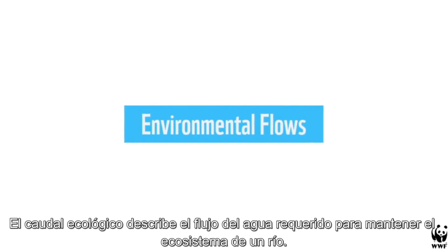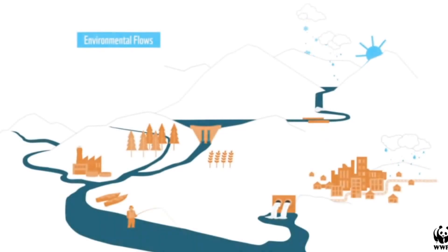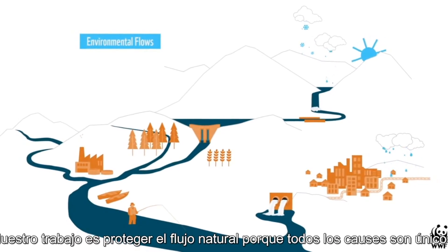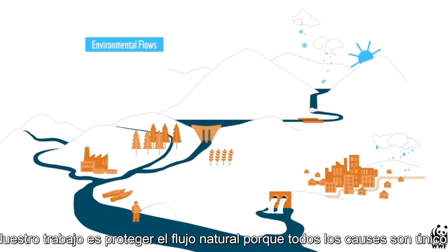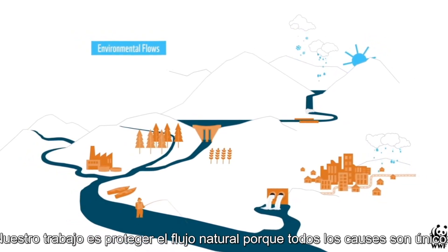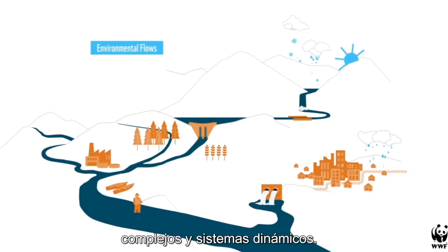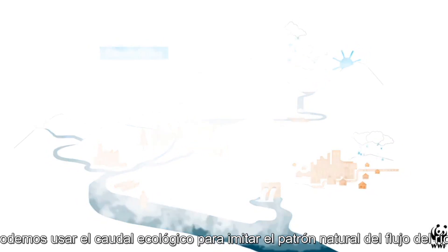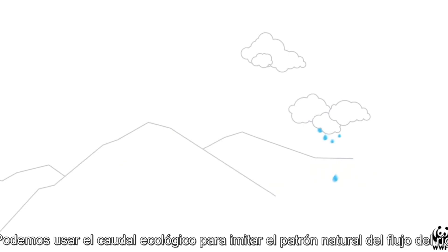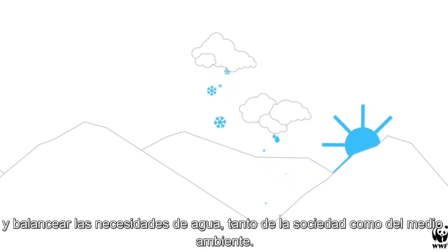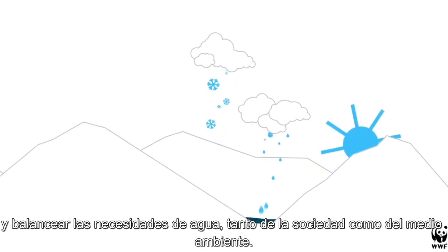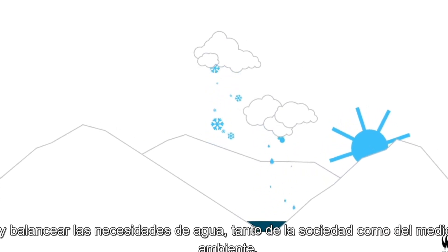Environmental flows describe the flows of water required to sustain a river's ecosystems. Our job is to protect the natural flows because all waterways are unique, complex and dynamic systems. We can use environmental flows to mimic the natural flow pattern of a river and balance the water needs of both society and the environment.